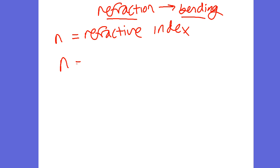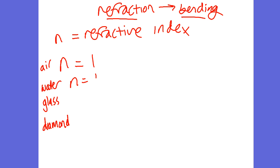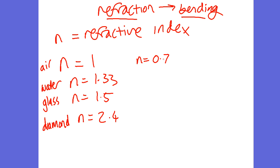Some useful refractive index values: for air, for water, for glass, and for diamond. You'll never be asked to recite these, but they're useful to know. If you get an N of less than 1, you've done something wrong. And if you've got an N greater than 4, you've probably done something wrong also.